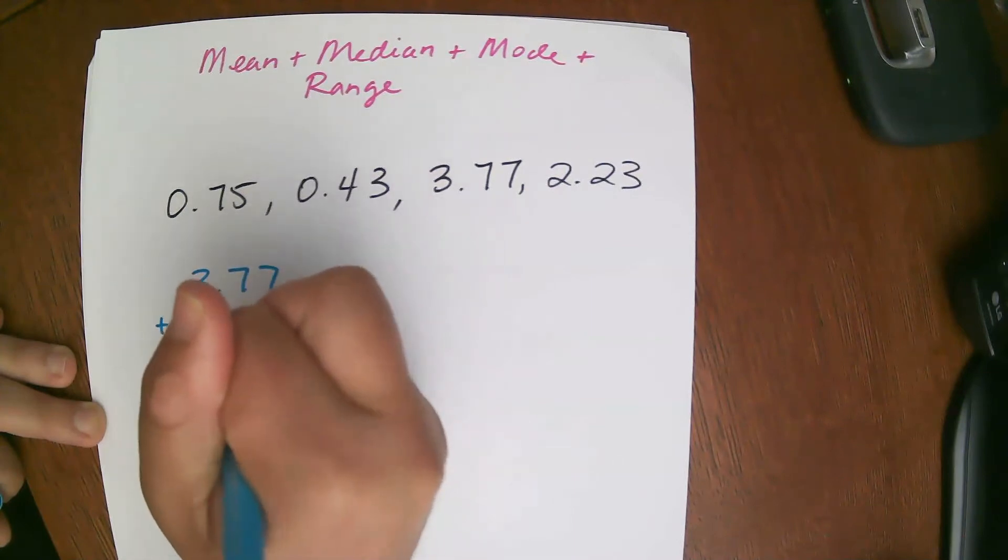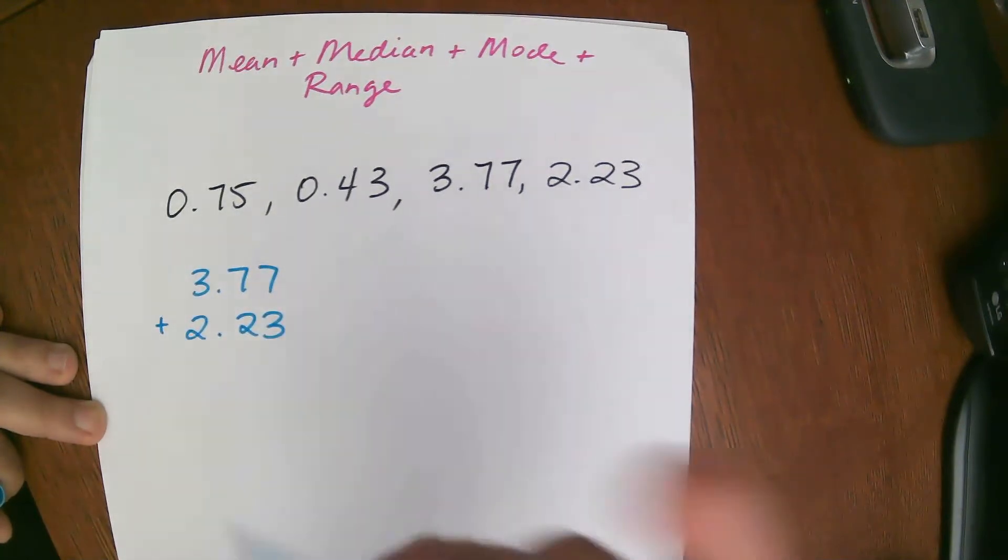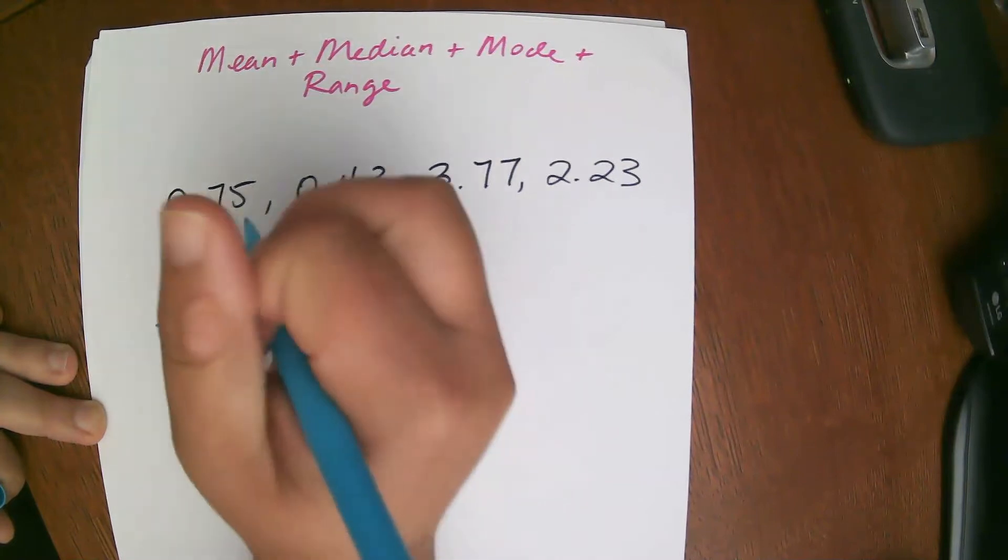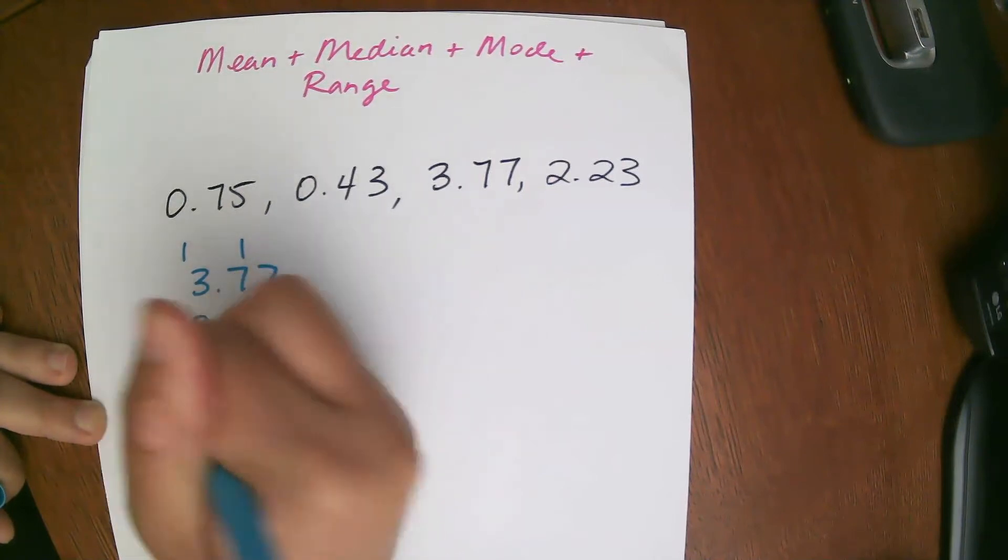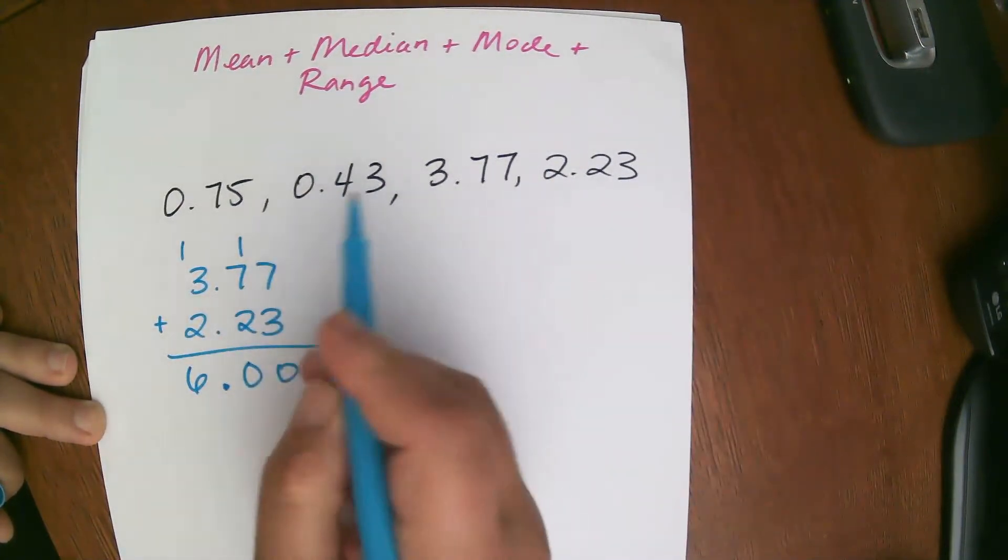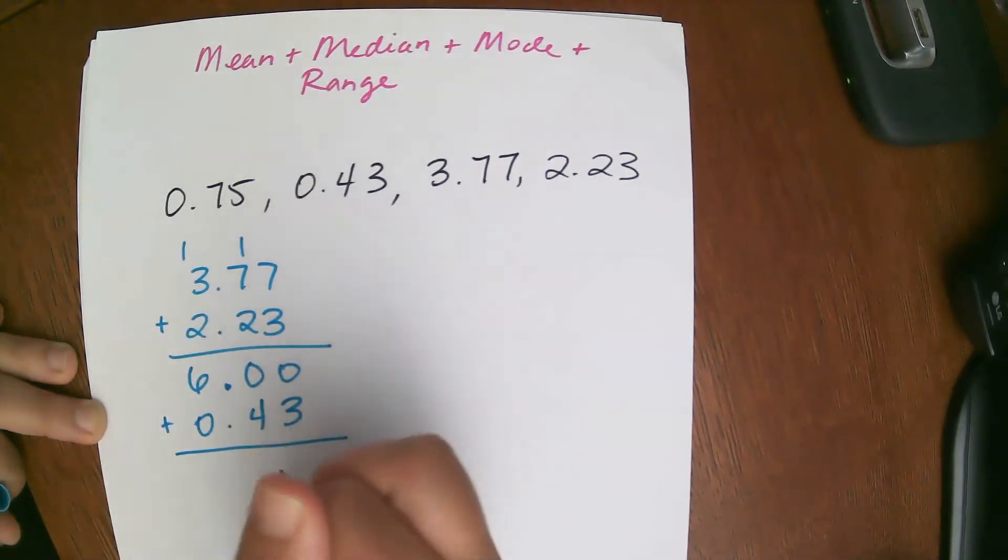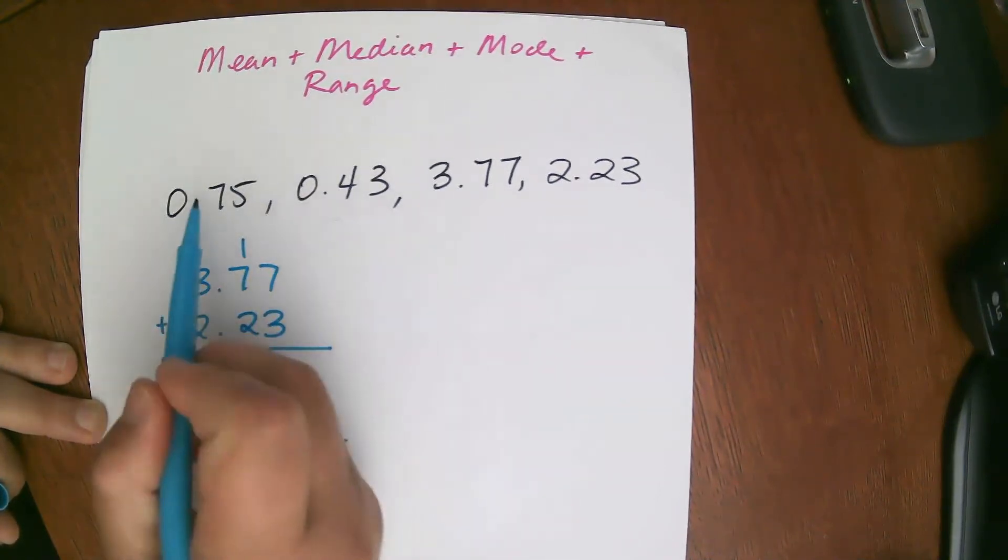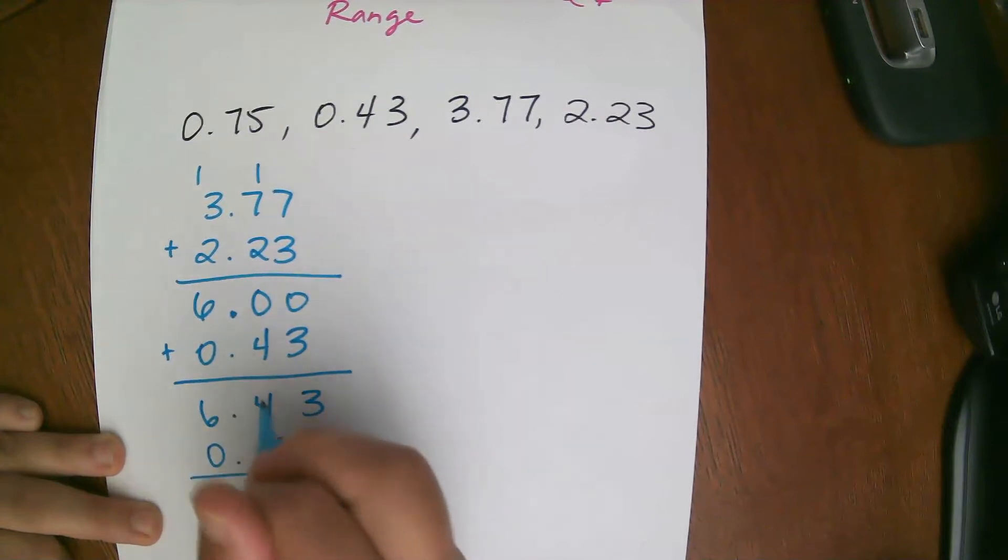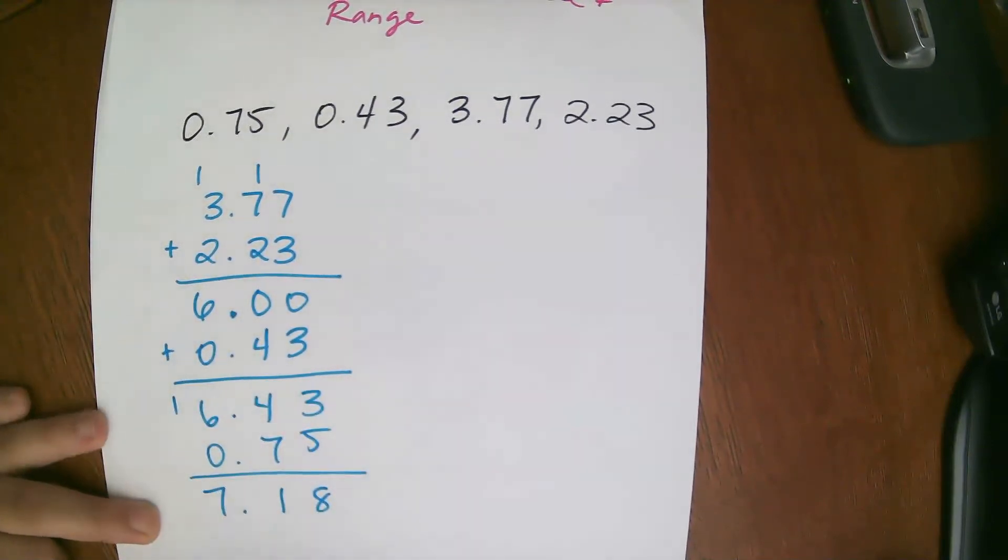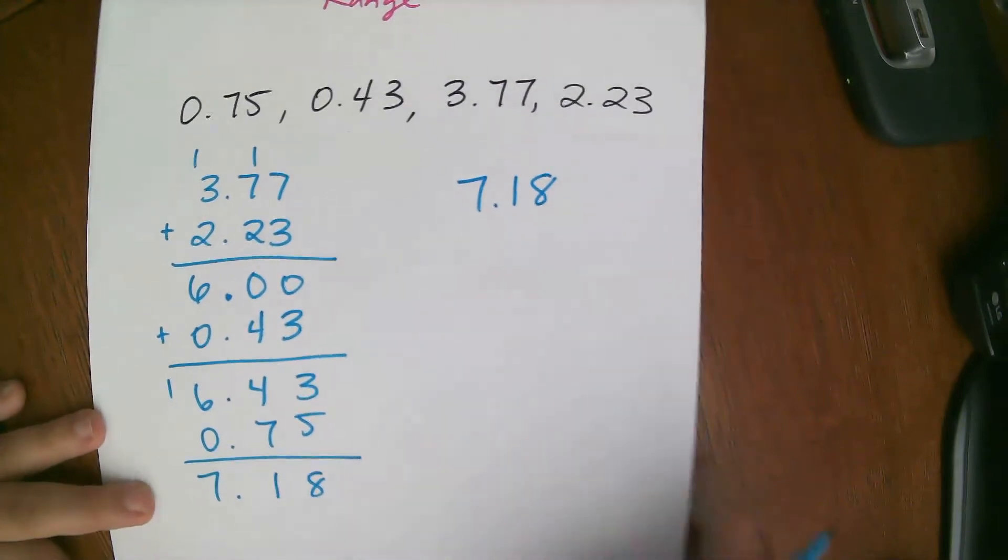So 3.77 plus 2.23. Now you can do it a couple ways. You can add them up two at a time and then add a little bit more onto it. So I'm going to go ahead and do that. It's a little bit easier for me. So 7 plus 3 is 10, carry the 1, 7, 8, 9, 10, carry the 1, 5 plus 1 is 6. So these two are 6. Now I'm going to add 0.43 to this, and I'm just going to keep kind of tacking it on. And then next I'm going to add 0.75, and that's kind of how I'm going to add them all up. So when I add them all up, I get 7 and 18 hundredths.